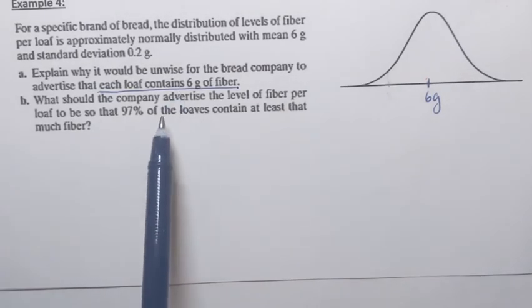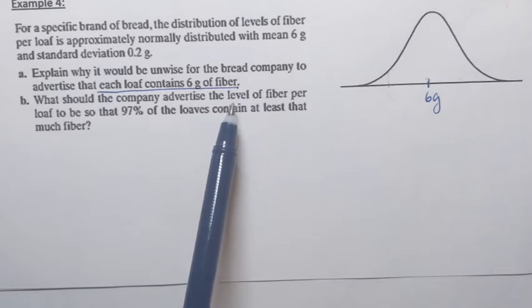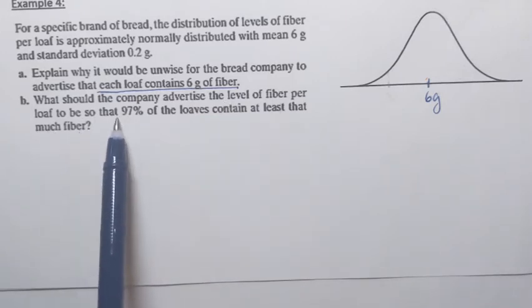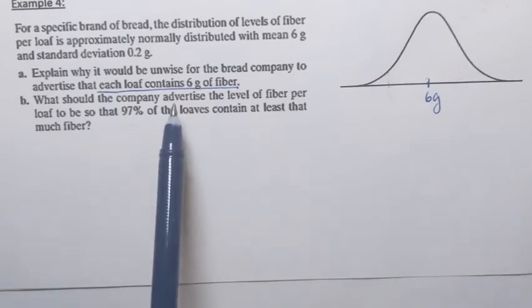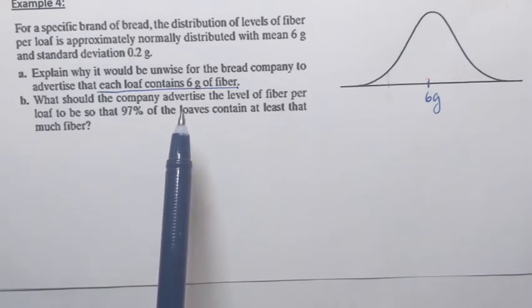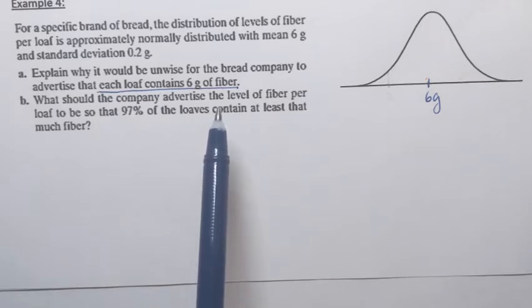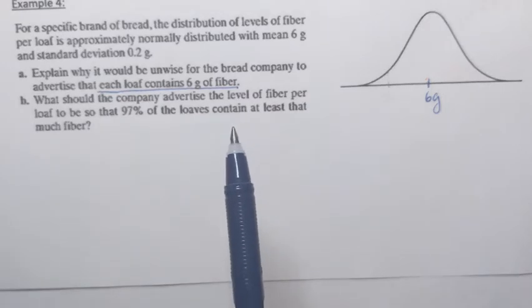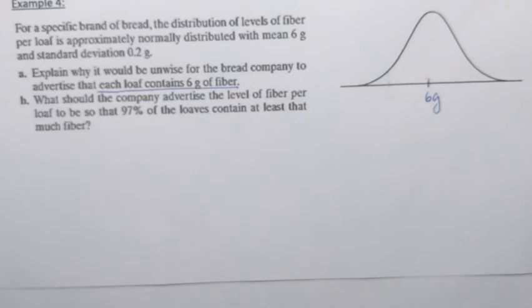And that's the reason why posing the next question is pretty logical, which is, what should the company advertise the level of fiber per loaf to be so that 97% of the loaves contain at least that much fiber? In other words, they need to put a different number on the package. And if we take a sample of 100 loaves and test and measure fiber on each loaf, then we're going to discover that 97 out of 100 loaves have that much, which is good. There are only about three of them would have less than the claimed amount of fiber. And our goal is to find that number, what they need to put on the package in this case.